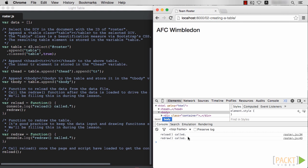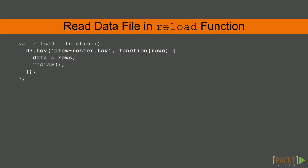Let's now fill in the reload function. In place of the console function, let's read in and parse the AFCW roster tab-separated value file. This is our data file, and the D3-TSV function parses it into an array of ordered maps for each record. This comes in very handy, as you'll see shortly. The parameter to TSV is a callback function with the resulting rows. Within the callback function, let's call redraw, which will bind the data to the DOM when we implement it.